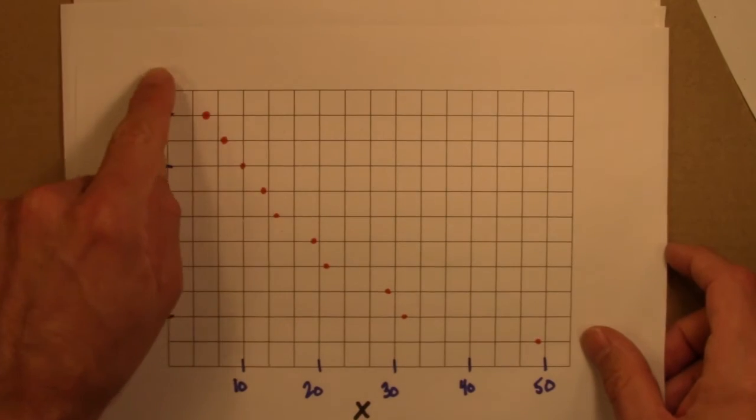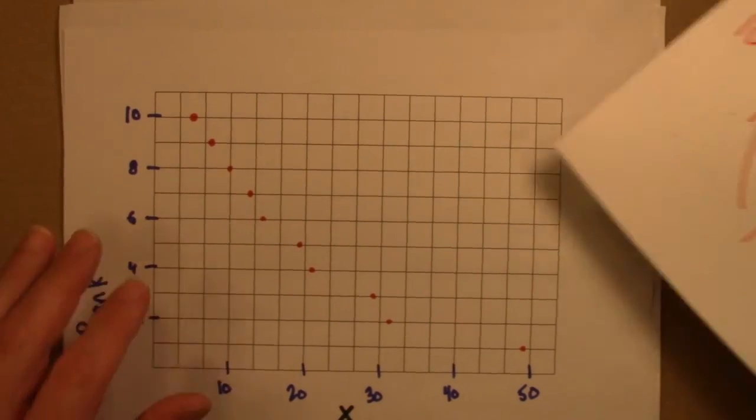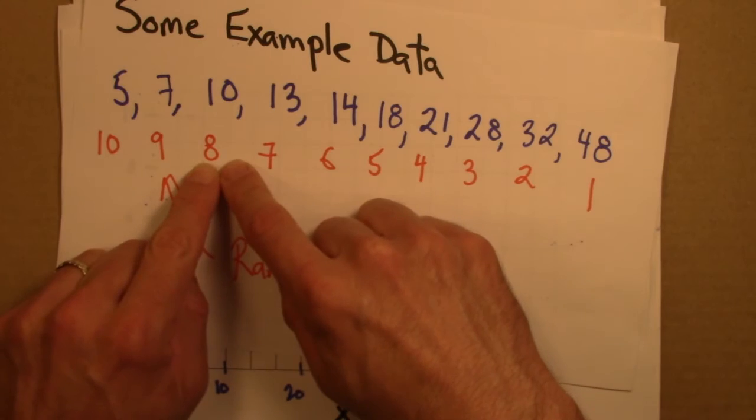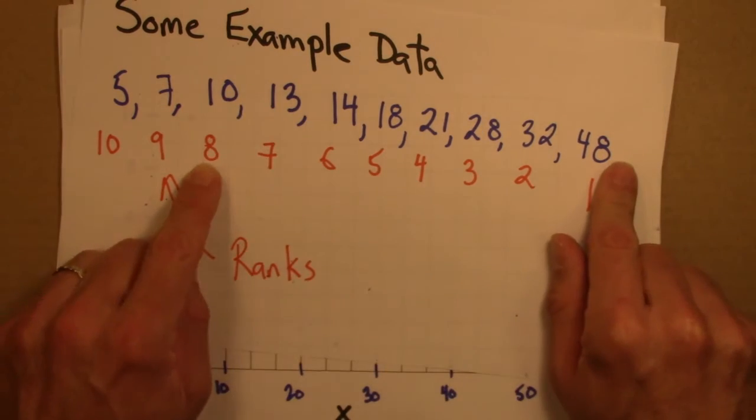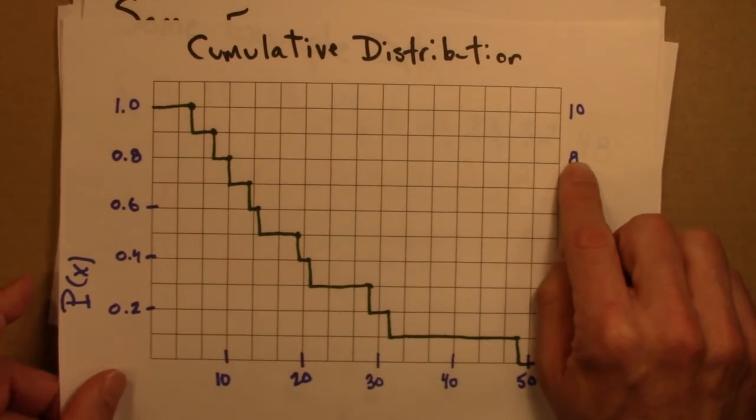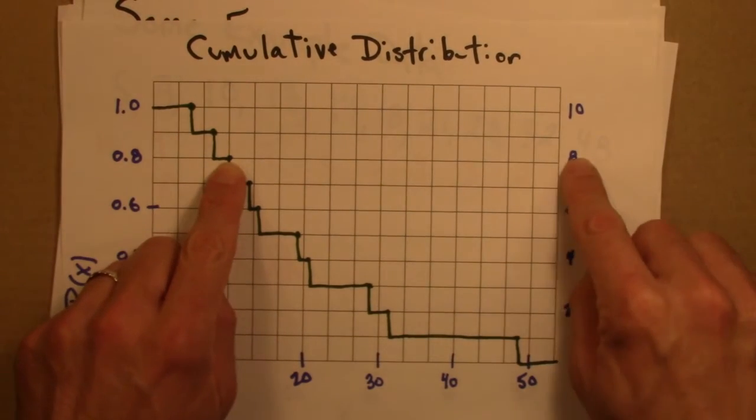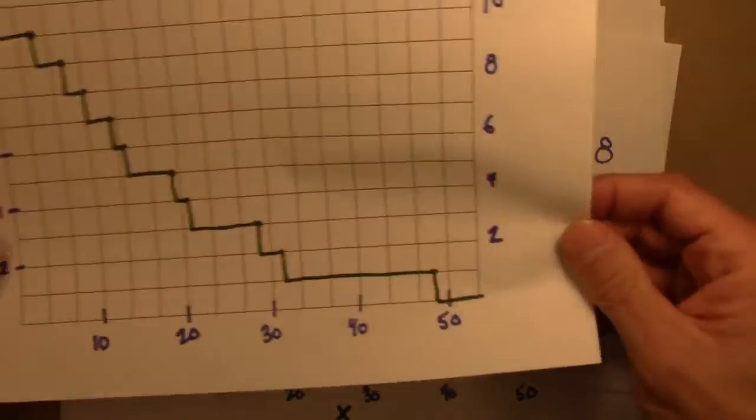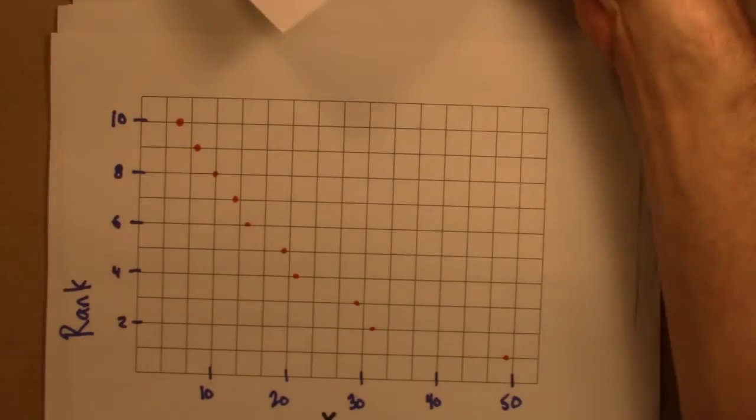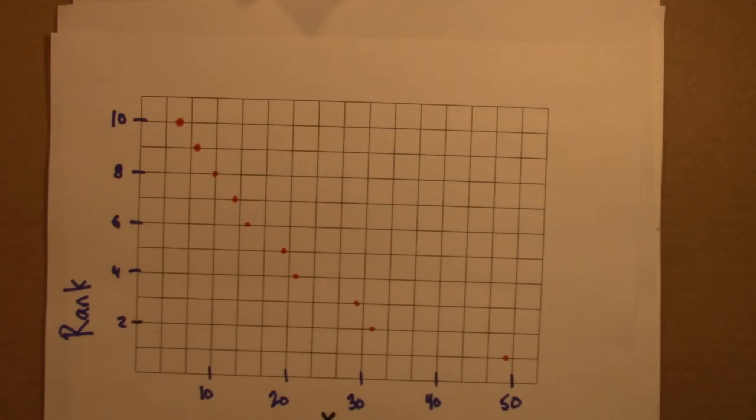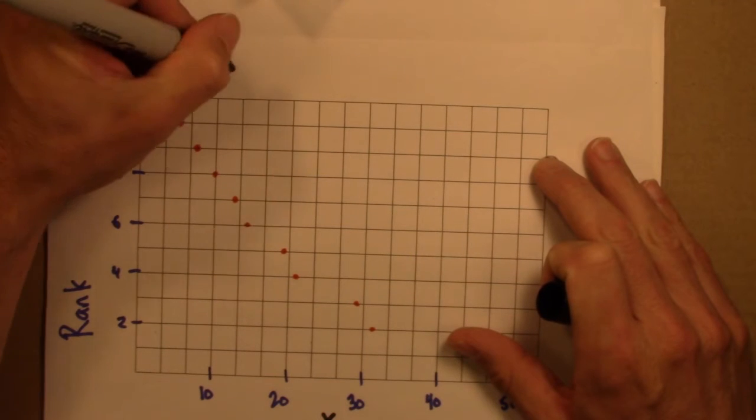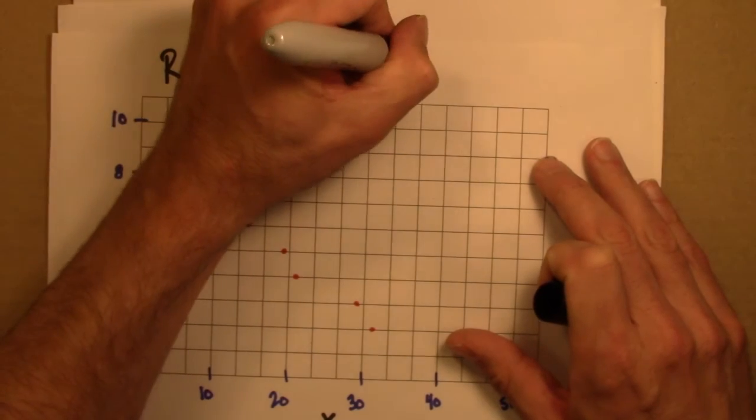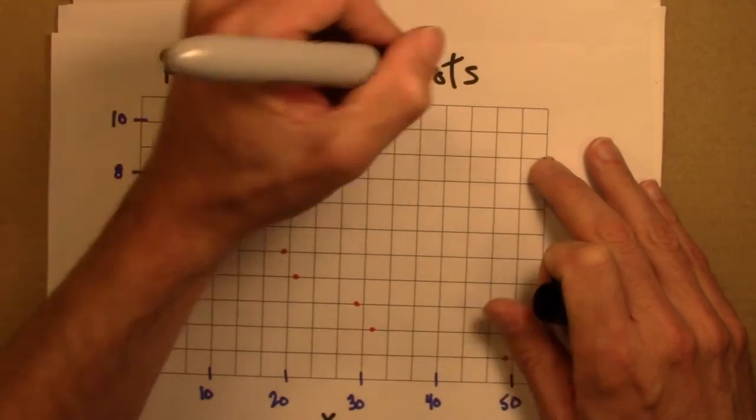So the cumulative distribution function and this type of Rank plot turn out to be the same thing. So you can sort of see that here. What does this 8 mean? Well this means that there are 8 data points that are 10 or larger. And that's exactly what we plotted here. So cumulative distribution functions can also be thought of as plots like this. And as I've mentioned, these are known as Rank Frequency Plots.